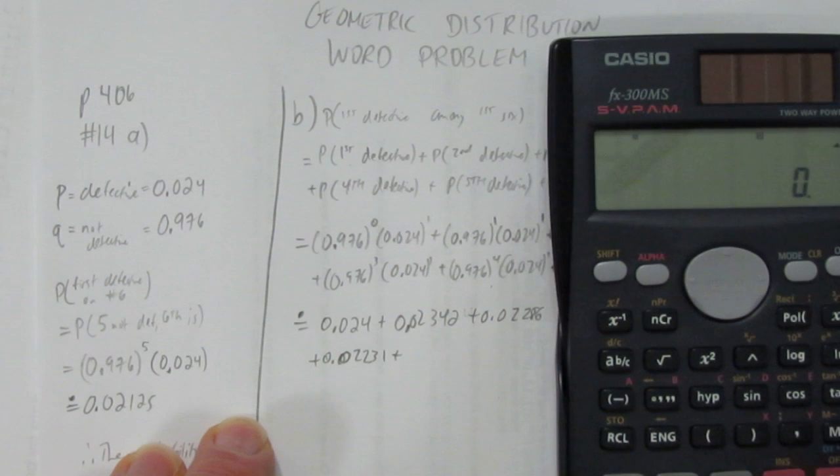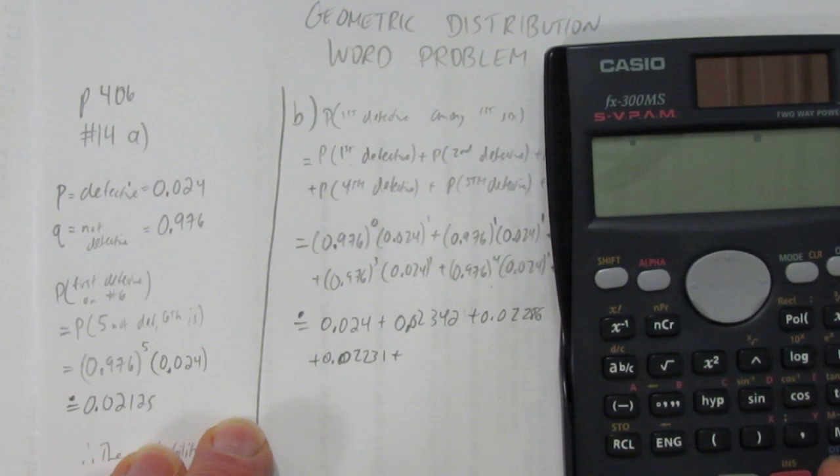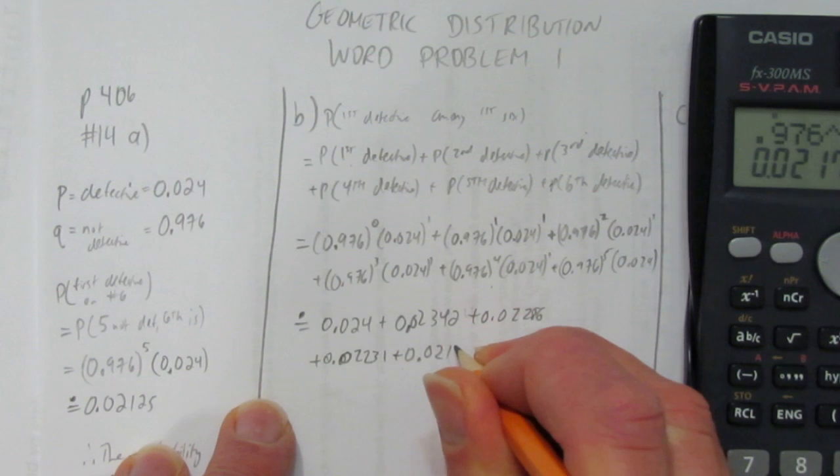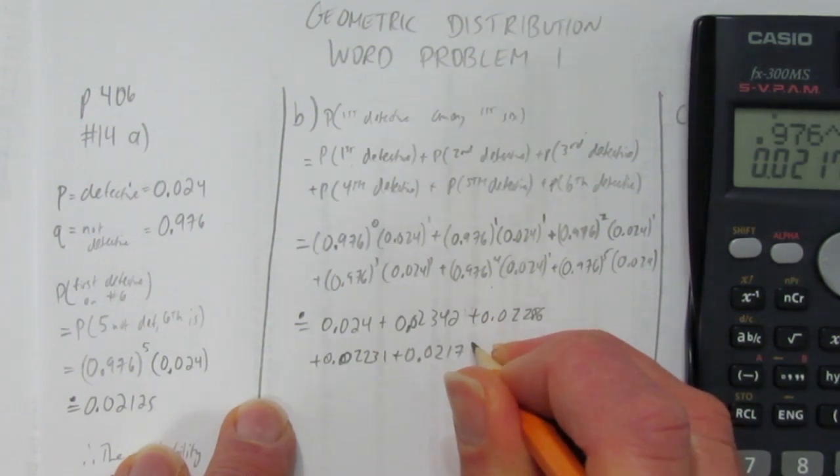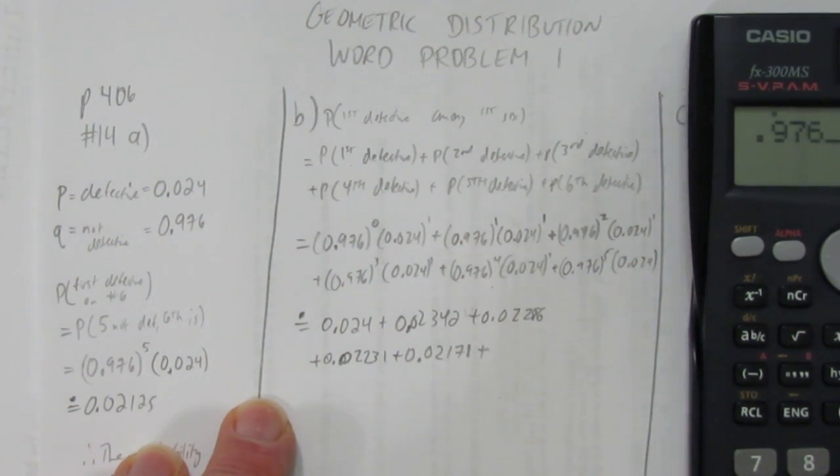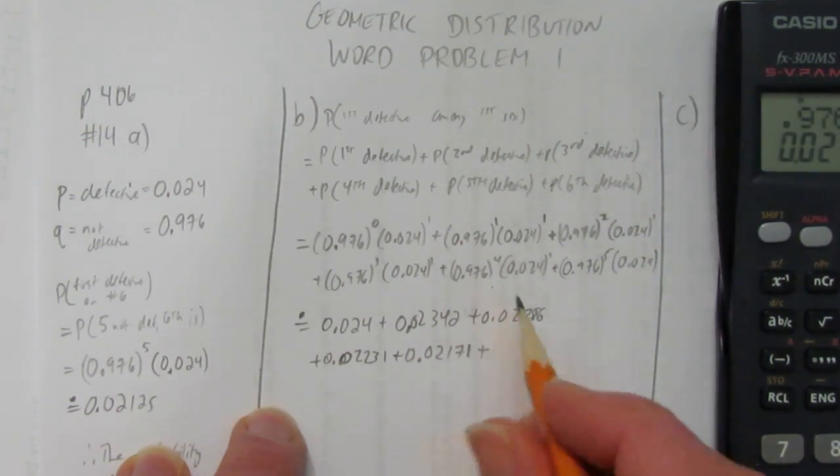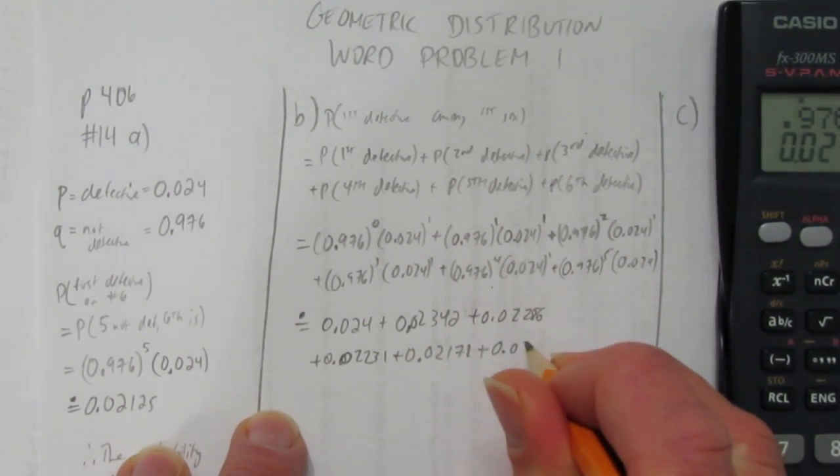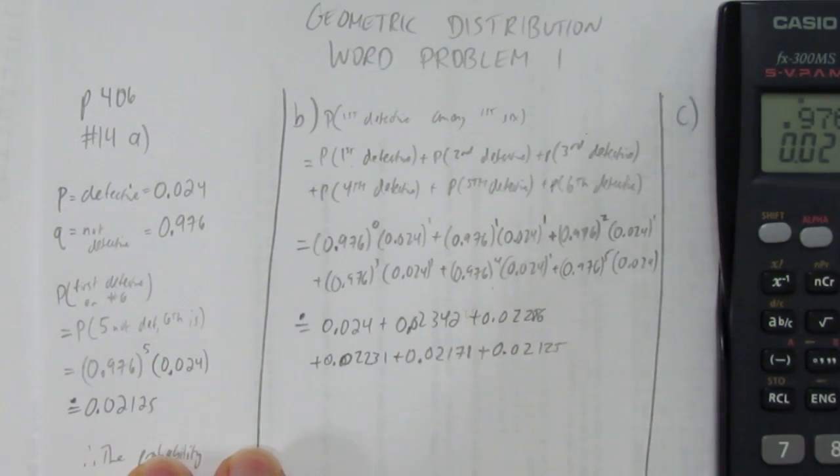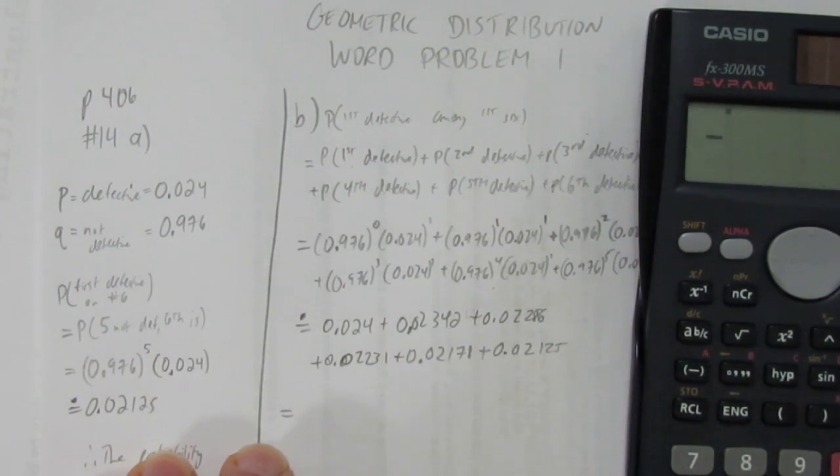Two more. 0.976 to the power of four, times 0.024, and you get 0.02178. Last one, and we're there. 0.976 to the power of five, times 0.024, and you get 0.02125. Didn't even need to do it, I already had it calculated here. But, did it anyway. So, all that's left is to add all those probabilities together.